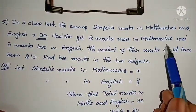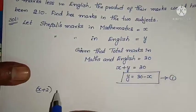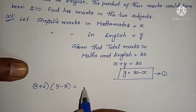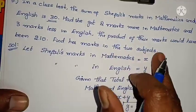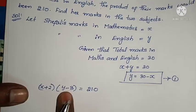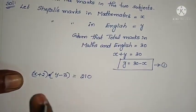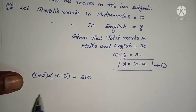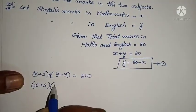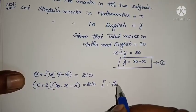2 marks more in mathematics means X plus 2, and 3 marks less in English means Y minus 3. The product of their marks would have been 210, so (X plus 2)(Y minus 3) equals 210. Substituting Y equals 30 minus X from equation 1: (X plus 2)(30 minus X minus 3) equals 210.